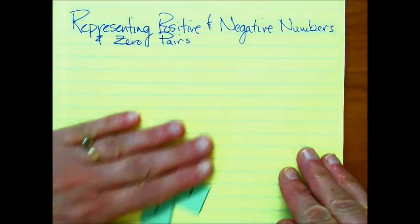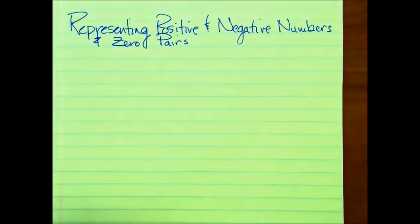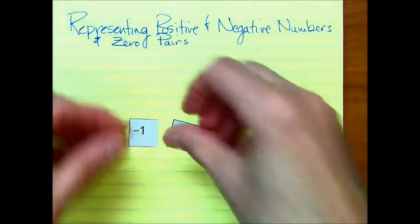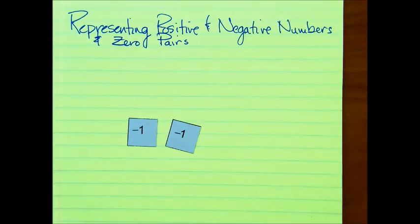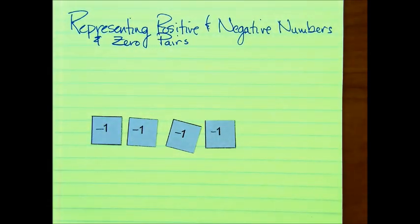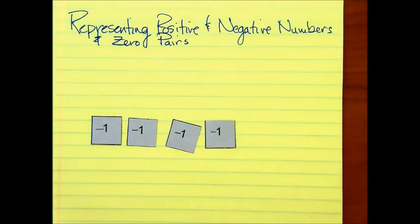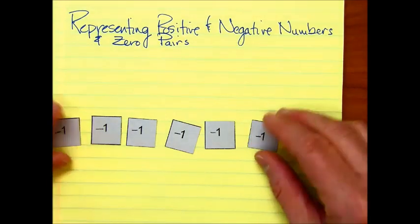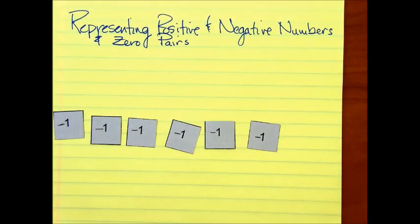I can do the same thing with my negative numbers. Say I want to represent negative four, so I put in my group four negatives — one, two, three, four. That represents negative four. If I want to represent negative six, I'm going to add two more, so now I have a total of six negatives, or negative six.